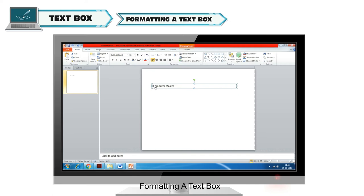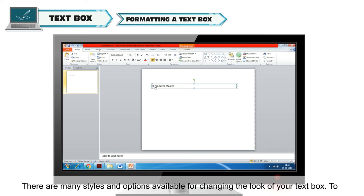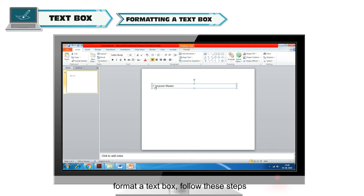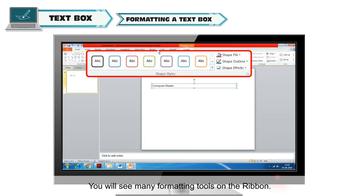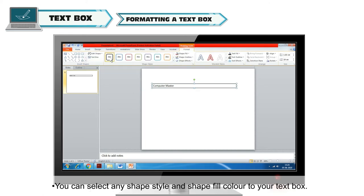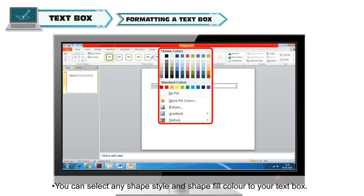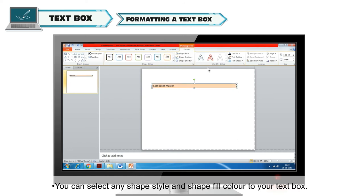Formatting a text box: there are many styles and options available for changing the look of your text box. To format a text box, select it and click on the Format tab. You will see many formatting tools on the ribbon. You can select any shape style and shape fill color for your text box.